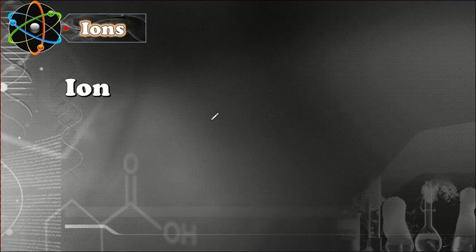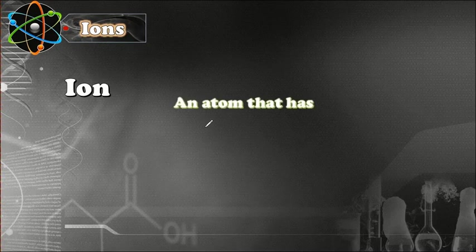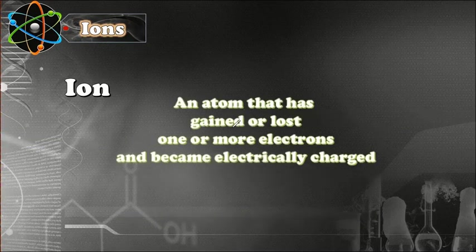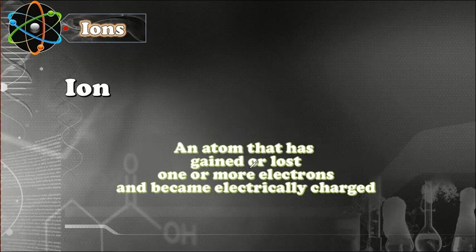Here we're going to look at ionic bonding, but first we're going to understand what is meant by an ion. An ion is an atom that has gained or lost one or more electrons and has become electrically charged.